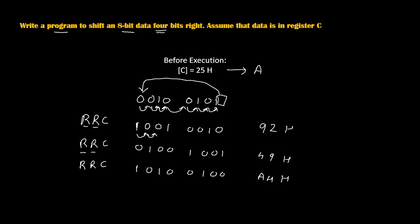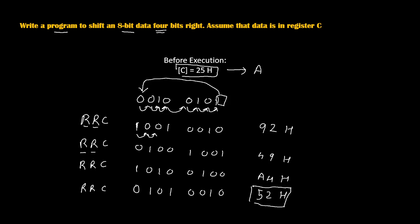One more time we rotate towards the right. After the third RRC, the bit pattern becomes 0, 1, 0, 1, 0, 0, 1, 0 — giving us 52H. After the fourth rotation we get our final answer as 52H. Before execution, the content of the C register was 25H.